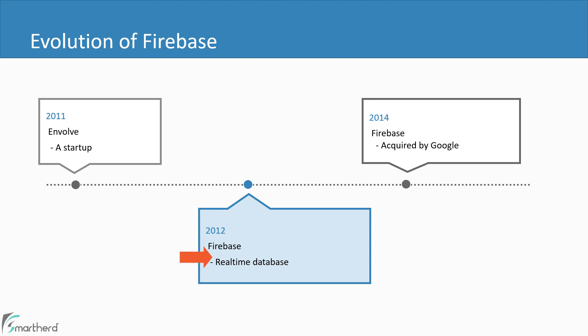Looking at this, the founders of Envolve decided to establish another company known as Firebase, which was launched in 2012. Initially, Firebase provided only a real-time database, which was used to store data in the cloud and sync that data across multiple platforms. But soon, in 2014, Firebase was acquired by Google — and the rest is history. Ever since then, Firebase provided all-round solutions to each problem that a developer faces in the real world. And since it is backed by Google, you can use it in your application without any hesitation.